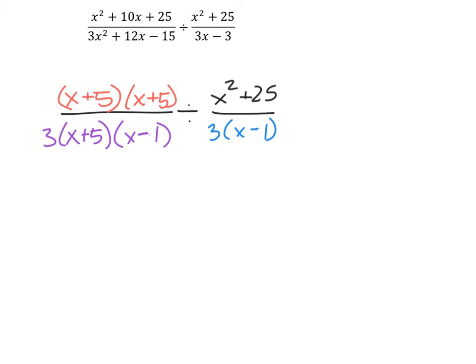From here, I can start canceling out. Already, we can see that we have this x plus 5, which will cancel out this x plus 5.